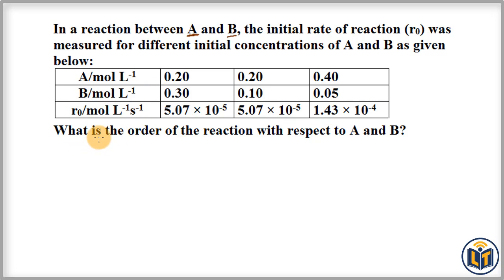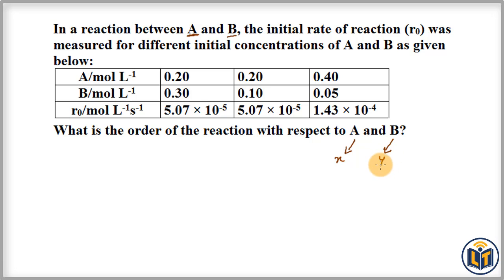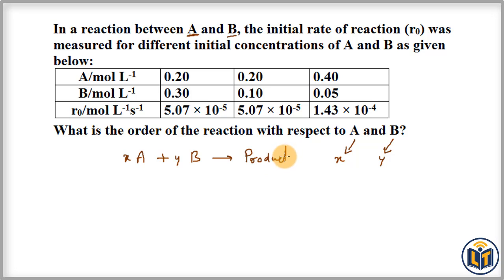The question asks: what is the order of reaction with respect to A and B? We assume that the order of reaction with respect to A is X and with respect to B is Y. Then the chemical reaction becomes X·A plus Y·B giving the product, and from this experimental data we have to find out the values of X and Y.